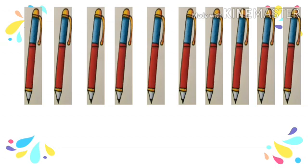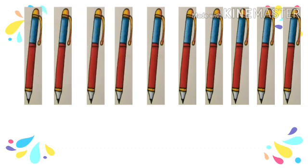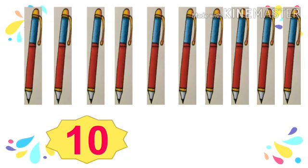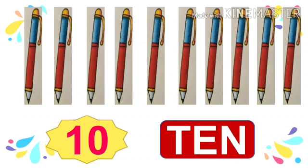Now what about numbers after 9? After 9 it comes 10, and numbers from 10 onwards have 2 digits. Let's count how many pens you can see: 1, 2, 3, 4, 5, 6, 7, 8, 9 — one-digit number — and 10. Total 10 pens. T-E-N, 10. The number 10 has two digits: first digit is 1 and second digit is 0.